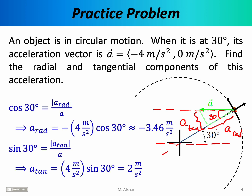The cosine of 30 degrees equals the adjacent leg divided by the hypotenuse. The hypotenuse is the magnitude of the acceleration vector, which equals 4 — since its Cartesian components are (-4, 0), the magnitude is √(16 + 0) = 4. So a_rad = 4 × cos(30°) ≈ 3.46. We include a minus sign because by convention a vector pointing into the circle is in the negative radial direction. The tangential component is 4 × sin(30°) = 2 m/s².